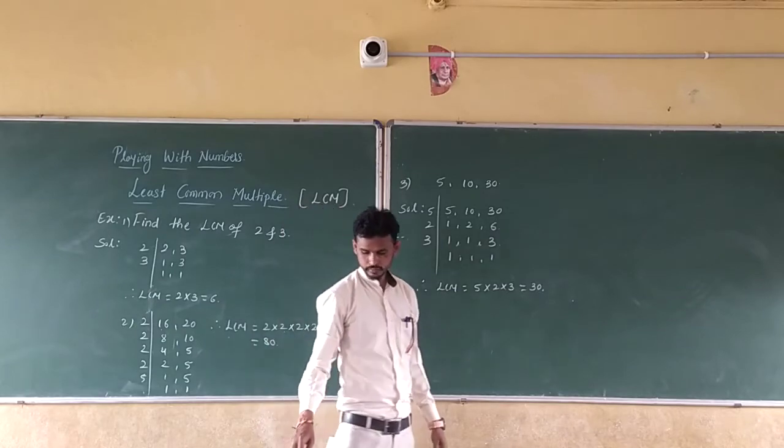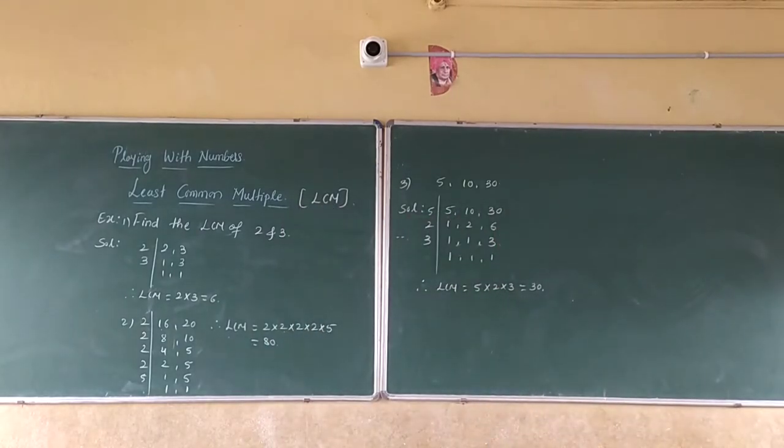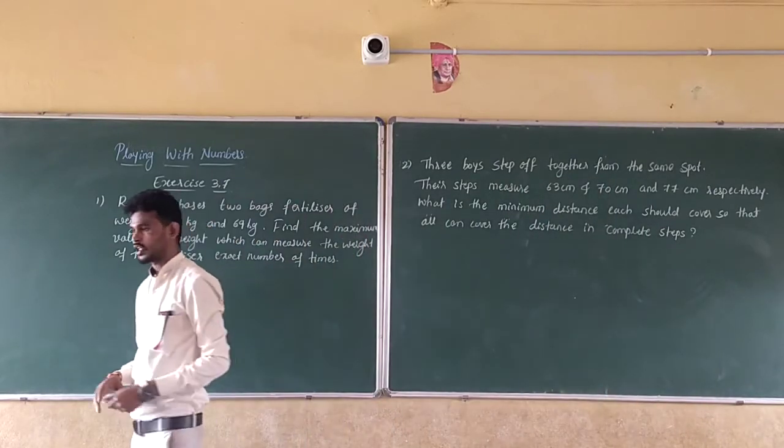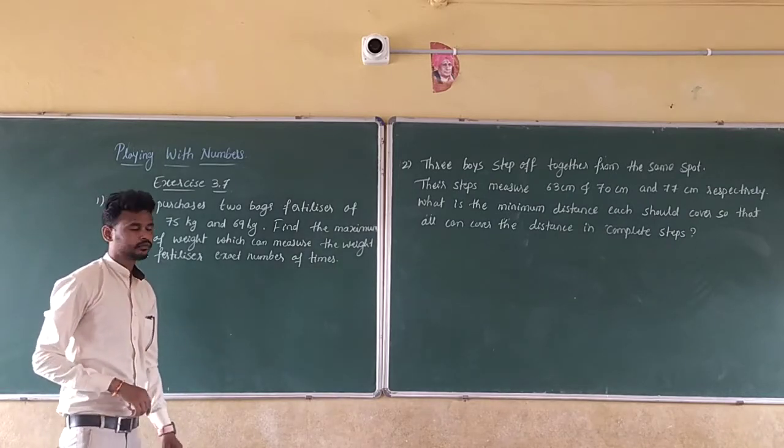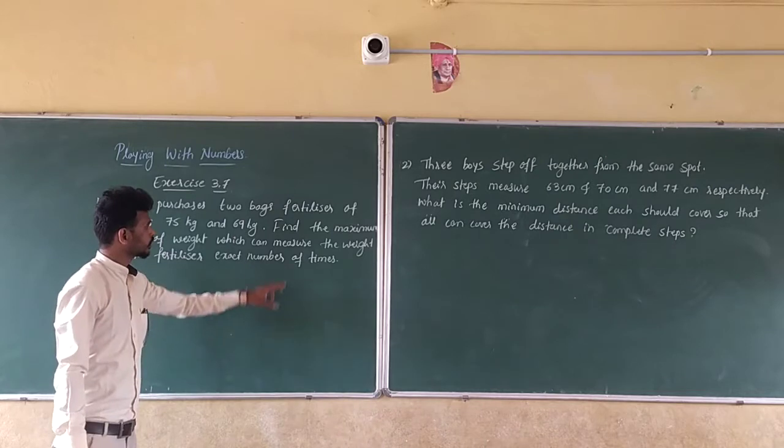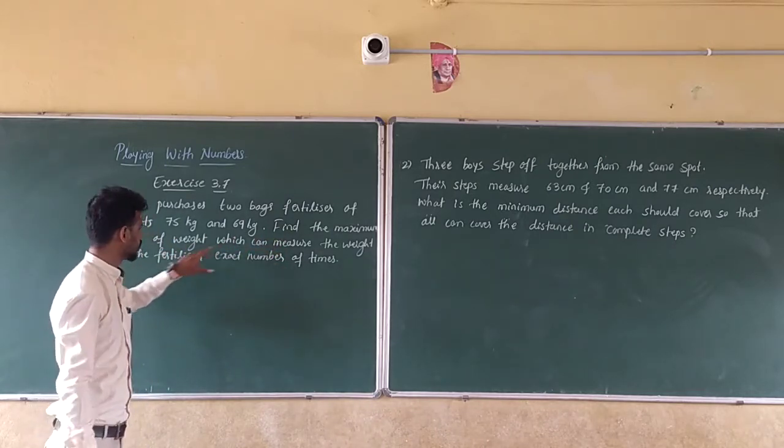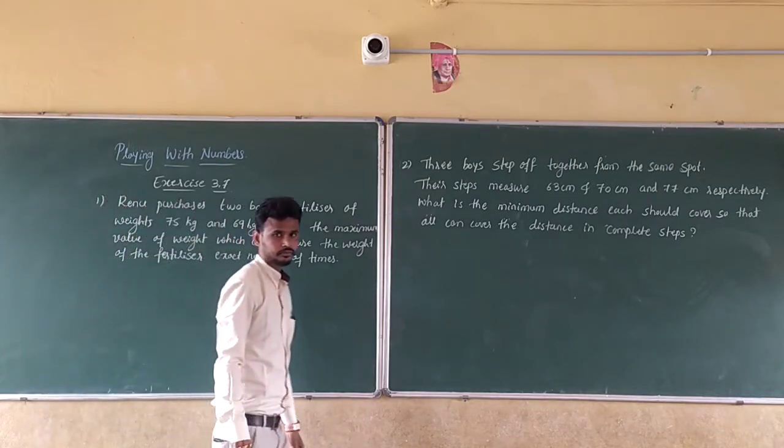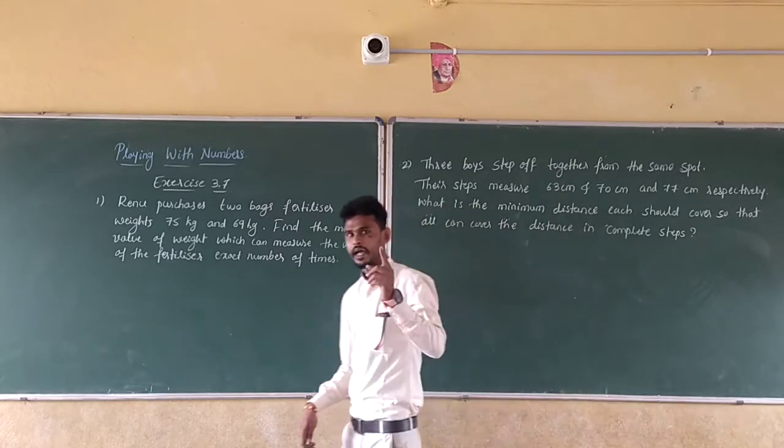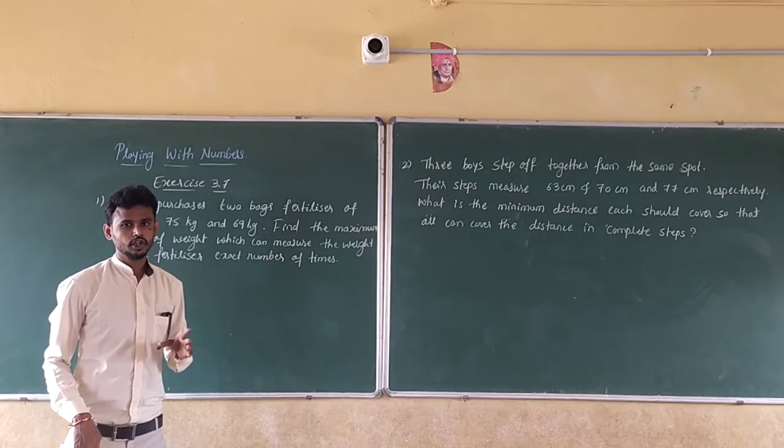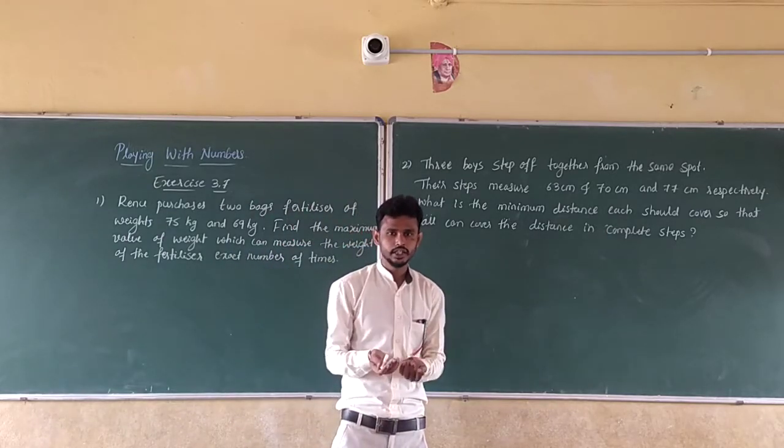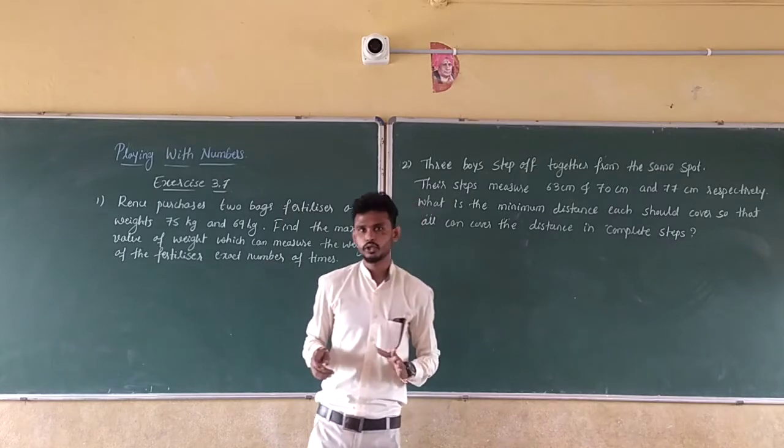We will see the next question from exercise 3.1. Renu purchases two bags of fertilizer of weight 75 kg and 60 kg. Find the maximum weight which can measure the weight of the fertilizers in an exact number of bags. So just remember, if they ask to find maximum, then you need to find HCF. And if they ask minimum, you need to find LCM. Maximum means HCF, minimum means LCM. Just remember those two things.